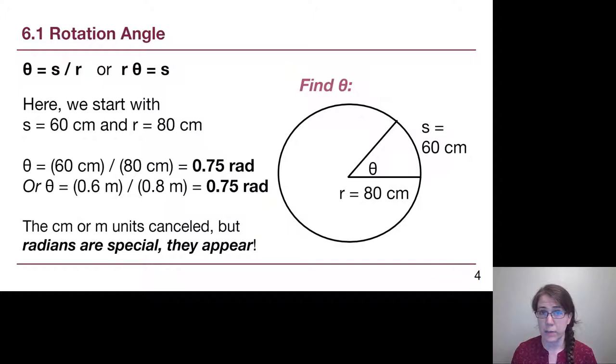If we think back to the equation we had on the previous slide, theta is equal to S over R. And so with our given information, we actually don't need to change the units because they will cancel out: 0.75. Or if we did want to convert to meters, 0.6 meters divided by 0.8 meters still gives 0.75.